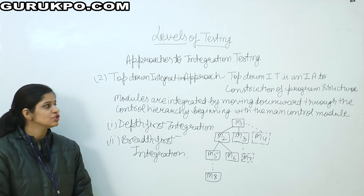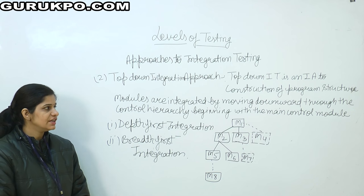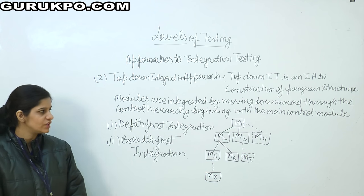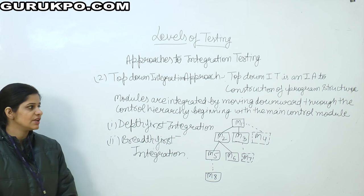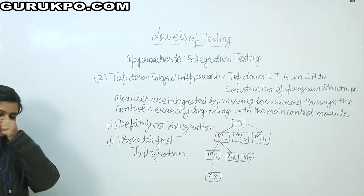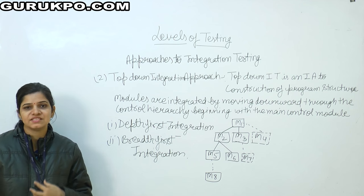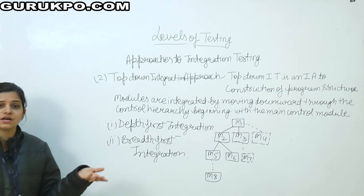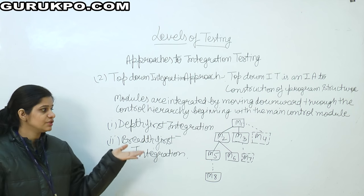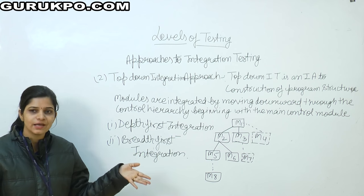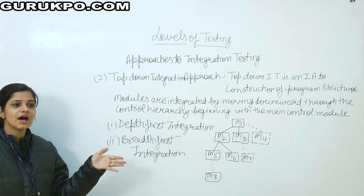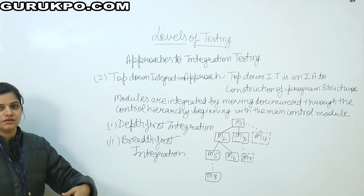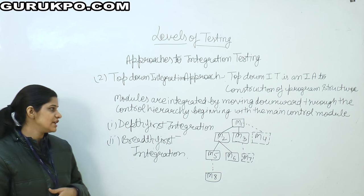Top-down integration approach is an integrated approach to construction of program structure. Modules are integrated by moving in a downward direction through the control hierarchy, beginning with the main control module. As the name suggests, top-down means integration will happen in the downward direction. Top-down integration follows the incremental approach — in incremental approach you add one module at a time, but here integration moves in the top-down direction.